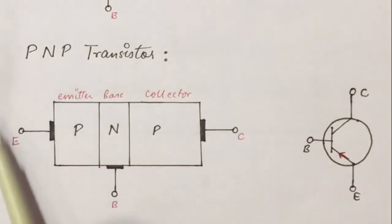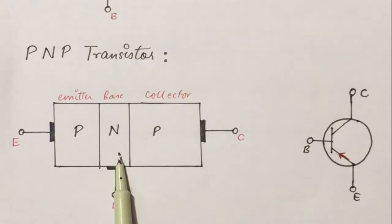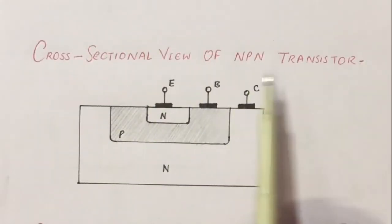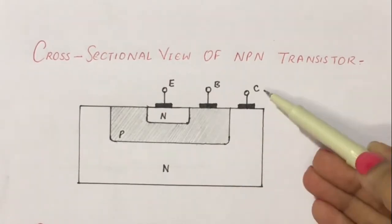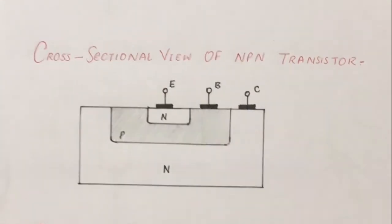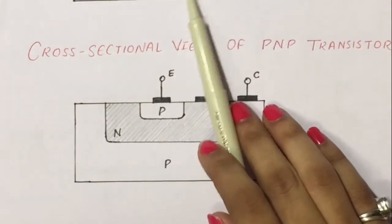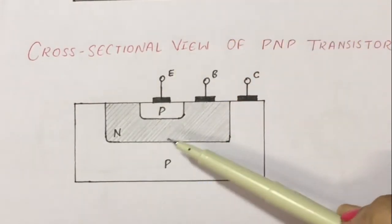In a PNP transistor, one N-type semiconductor is sandwiched between two P-type semiconductors. In PNP transistors, holes are the majority charge carriers, and in the symbol of the PNP transistor, the direction of the arrow is from emitter to base. In the cross-sectional view of the NPN transistor, we can see the emitter region, emitter terminal, base region, base terminal, collector region, and collector terminal, all connected through metal contacts. Comparing with the PNP transistor's cross-sectional view: in NPN, the two N-type semiconductors are replaced by two P-type semiconductors, and the P-type base is replaced by an N-type semiconductor.